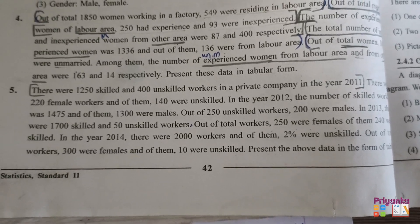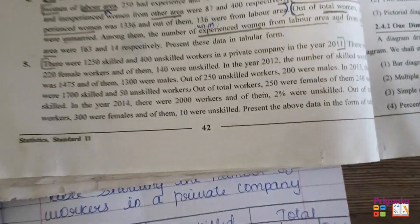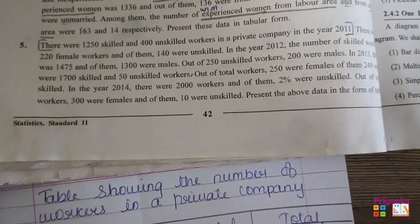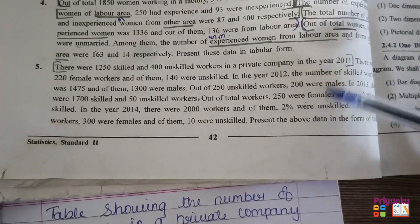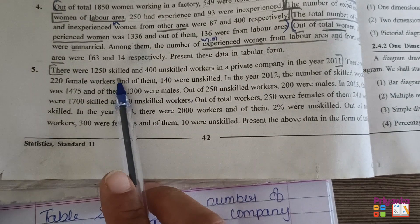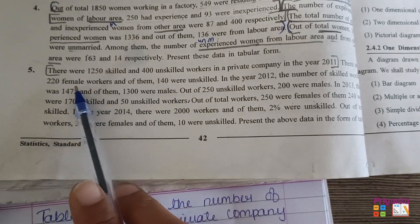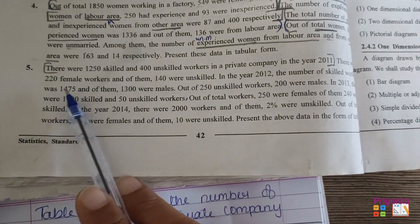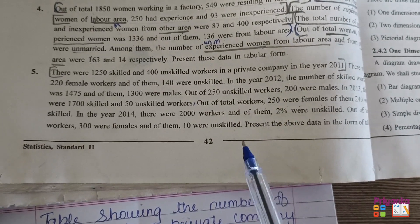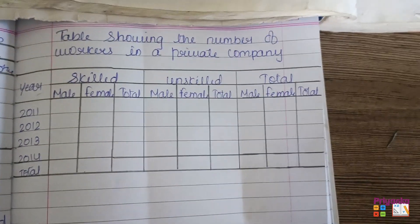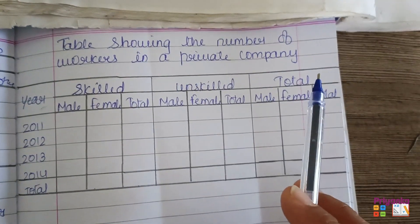Question number 5 on page number 42. After reading the whole question, it was found that we have to prepare a table showing the numbers of workers in a private company. After reading, I found the number of skilled and unskilled workers has been asked, along with the number of male and female workers for a particular year. As per the given information, I prepare the table with the heading: 'Table showing the number of workers in a private company.'